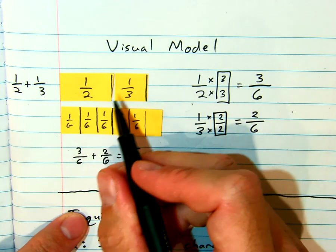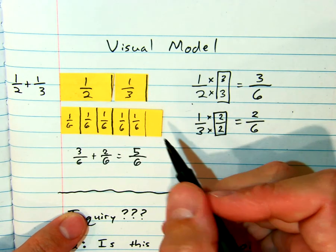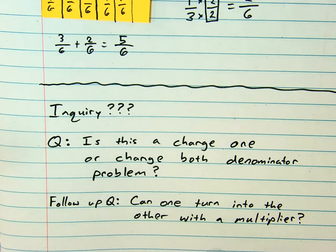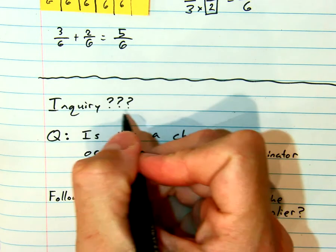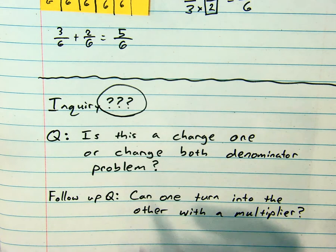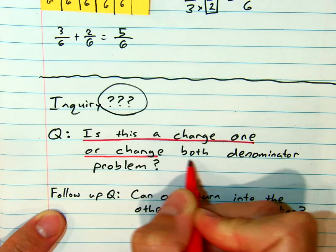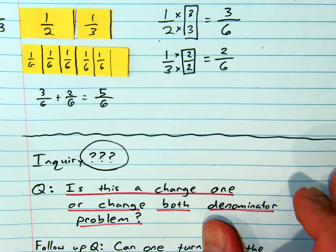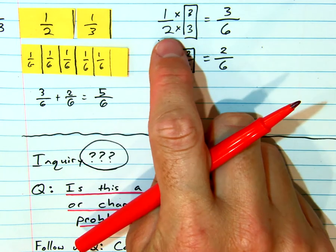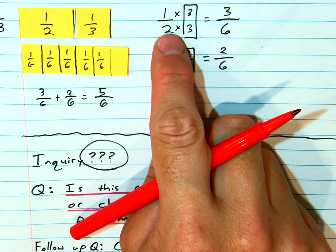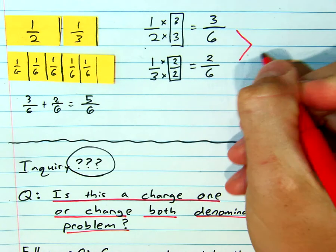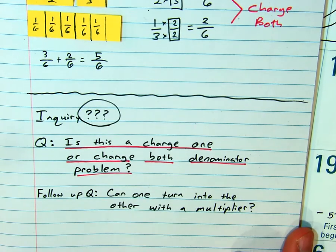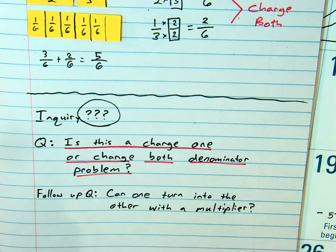So if you've got the ability to draw this out, if you've got post-it notes, you could use that fraction website we were working on. But this is how we visually go about it. I personally like the inquiry method. Say it with me. Inquiry. And inquiry simply means question. So we want to ask ourselves these questions. Is this a change one or change both? Denominator problem. Now, in the example above, could I turn a two into a three? No. What about a three into a two? Is that possible? No. So this is an example of a change both. So our follow up question is, can one turn into the other with a multiplier?